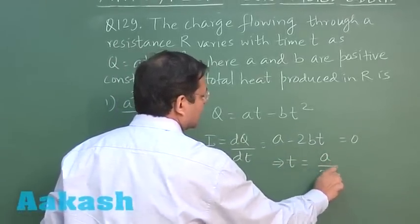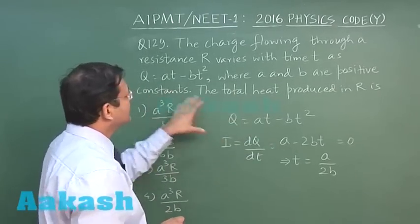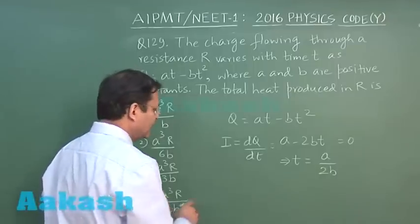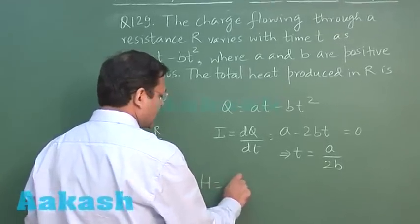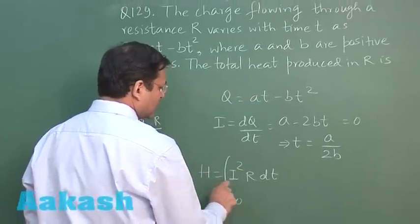Where a and b are positive constants, total heat produced in R will be i squared R dt, to be integrated between t equals zero to t equals a by 2b.